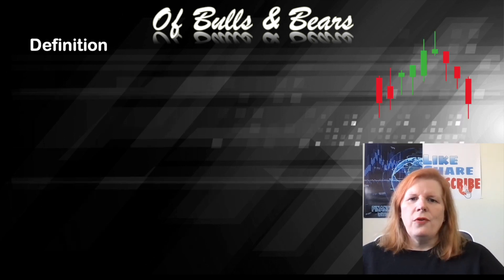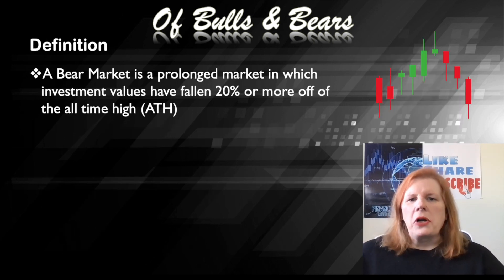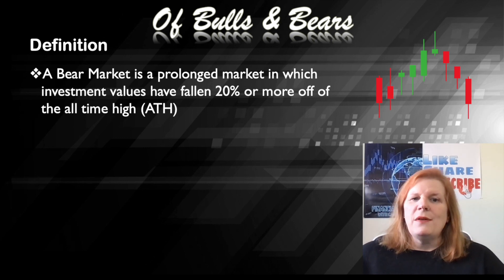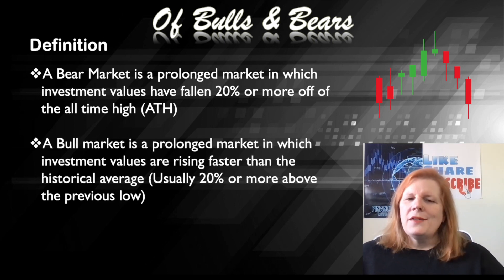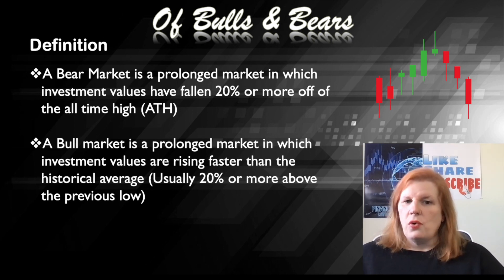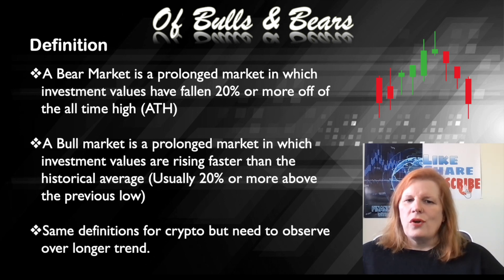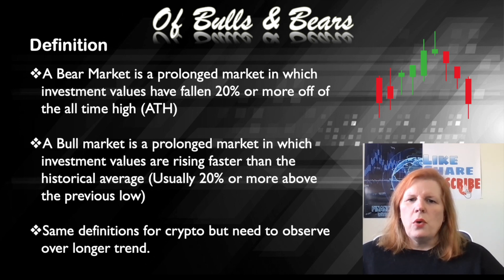So let's get into some further definition. A bear market is a prolonged market in which investment values have fallen 20% or more off of the all-time high, or ATH. A bull market is a prolonged market in which investment values are rising faster than the historical average, usually 20% or more above the previous low. When it comes to crypto, we use the same definitions, but we need to observe the trend over a longer period of time because crypto, with its volatility, will have massive jumps and drops of 20% or more.